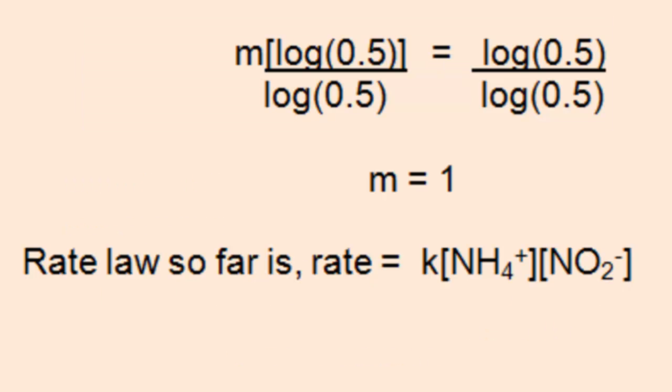Now the rate law can be rewritten as rate equals k times the ammonium concentration raised to the first power times the nitrite concentration also raised to the first power. And again, it is coincidental that they're both 1. The fact that they're both 1 has nothing to do with the stoichiometry of the reaction. If you remember, both of these reactants had a 1 in front of them.